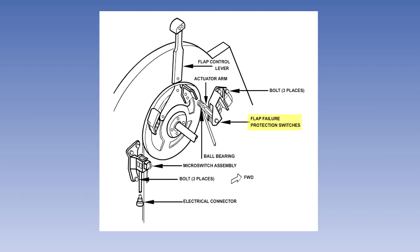Shown here is the Boeing 747 flap lever, which has a number of microswitches fitted to warn the crew of flap failures.